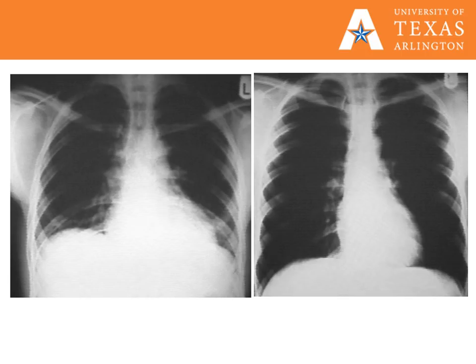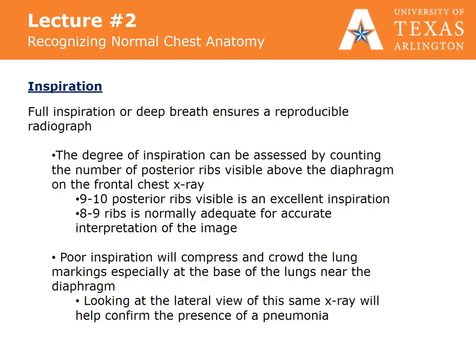These films are both overexposed, but the left is a poor inspiration and the right is just an overexposure. Full inspiration or a deep breath ensures a reproducible radiograph. The degree of inspiration can be assessed by counting the number of posterior ribs visible above the diaphragm on the frontal chest x-ray. Nine to ten posterior ribs should be visible for a good inspiratory film. Eight to nine ribs is normally adequate for accurate interpretation of the image. Poor inspiration will compress and crowd the lung markings, especially at the base of the lungs near the diaphragm.